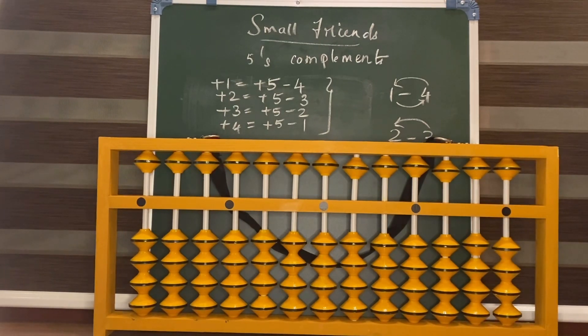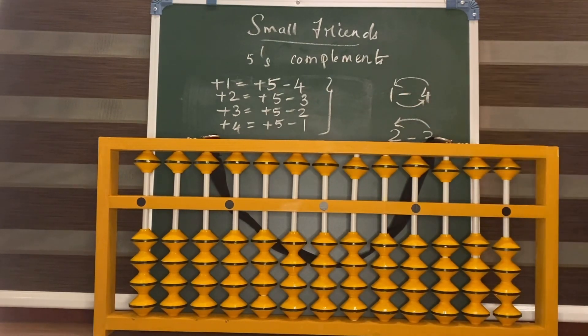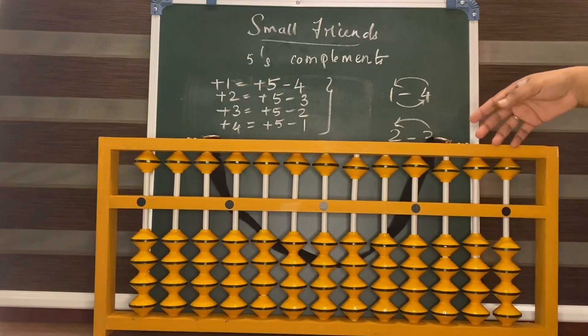In the same way, 5's complements means if you add 2 numbers together, we will get 5. See here 1 plus 4 is 5, right? So, 1's friend is 4, 4's friend is 1. Same like that, 2's friend is 3, 3's friend is 2.